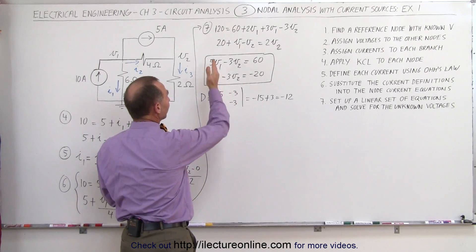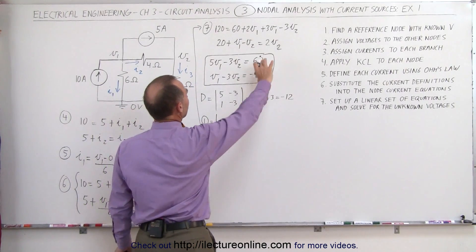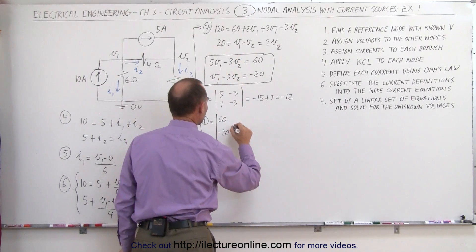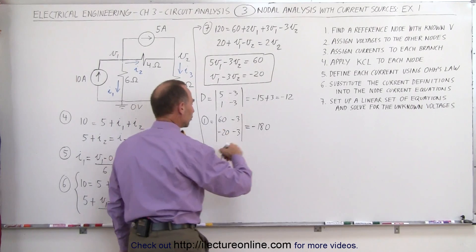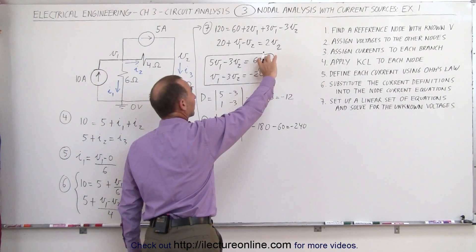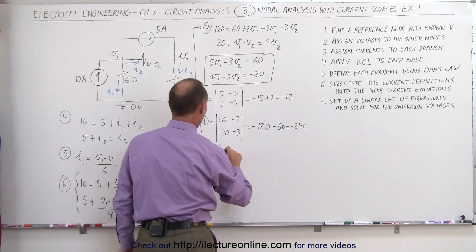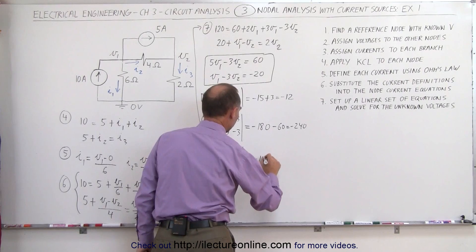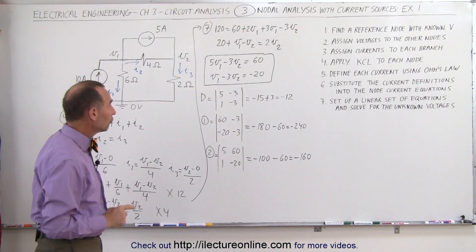To find V1, we form matrix 1 by replacing the V1 coefficients with the constants 60 and minus 20, keeping the V2 coefficients minus 3 and minus 3. The determinant of that matrix is (60)(−3) minus (−20)(−3), which is minus 180 minus 60, equal to minus 240. For V2, we form matrix 2 by keeping the V1 coefficients 5 and 1, and replacing the V2 coefficients with 60 and minus 20. That determinant equals (5)(−20) minus (1)(60), which is minus 100 minus 60, equal to minus 160.